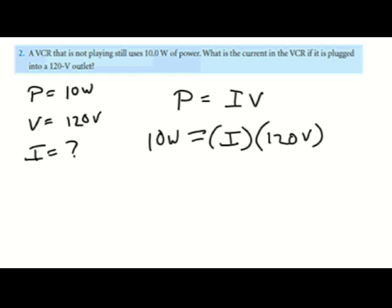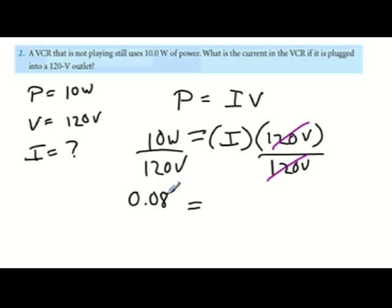Using a little bit of algebra, we can take both sides and divide it by 120 volts. 120 volts on the right side cancels out. 10 divided by 120 is 0.083 amps. Now this makes sense because you would figure an electronic device that is not fully powered up would have a very low amperage.